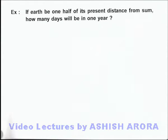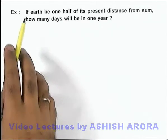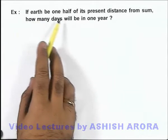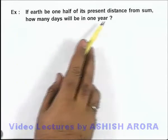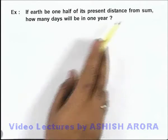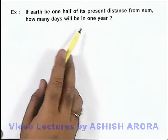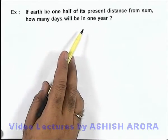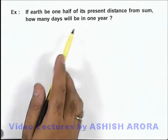In this example, we are given that if Earth were half of its present distance from the Sun, how many days will be in one year — we are required to find.